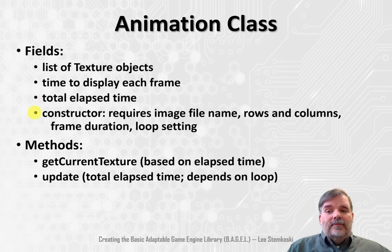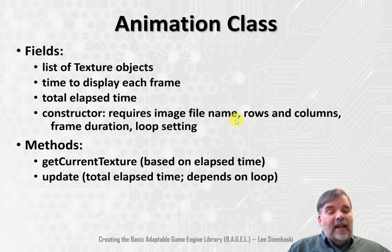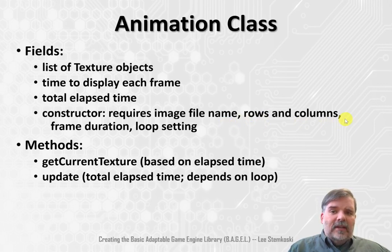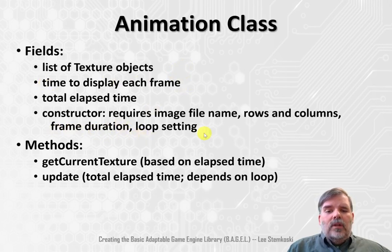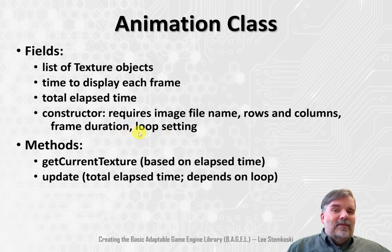Finally, in the constructor, we need the information to set this up. To create the list of texture objects, we'll need the name of the image file, and we'll need to know how many rows and columns are in that image so we can create our rectangular regions for each texture correctly. We'll need to know the duration that each frame is going to be displayed, and we'll also need something I call a loop setting — in other words, when we get to the end of the animation, does the animation stop or does it repeat from the beginning?